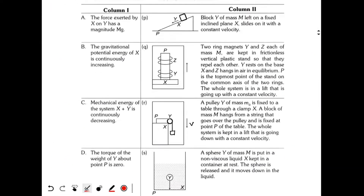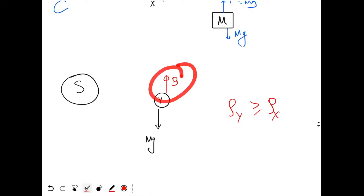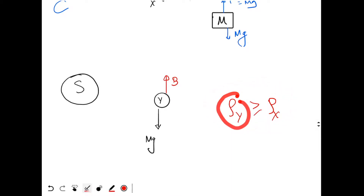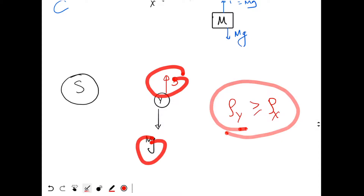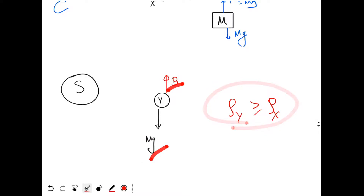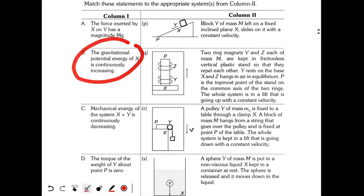Option A for S: force exerted by X on Y has magnitude Mg — the force applied by the liquid on the sphere is the buoyant force. The buoyant force may or may not equal Mg because we don't know the exact relation between densities. If densities are equal then B = Mg, but we cannot be certain — so option A is not correct for S.